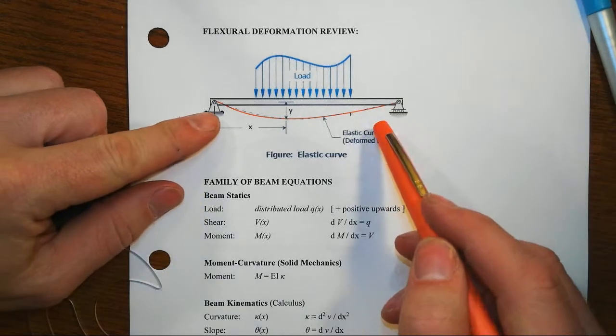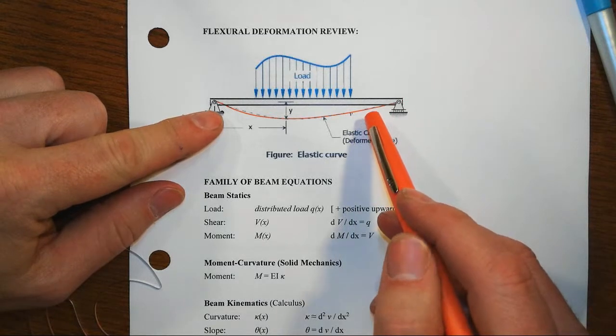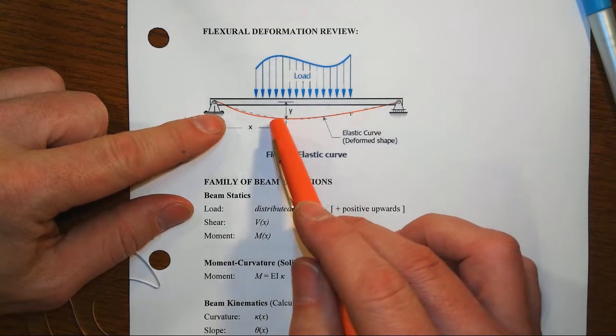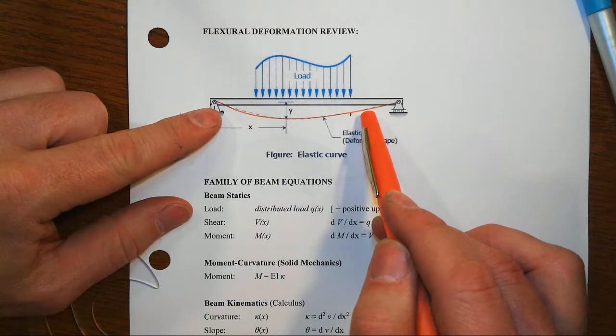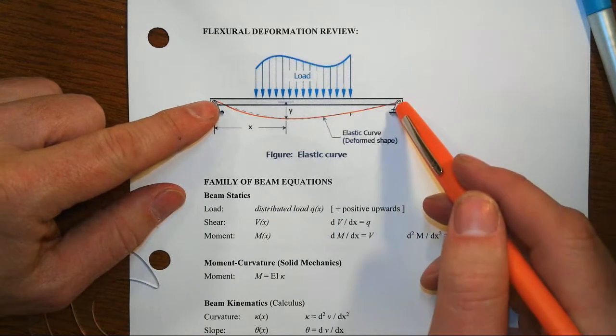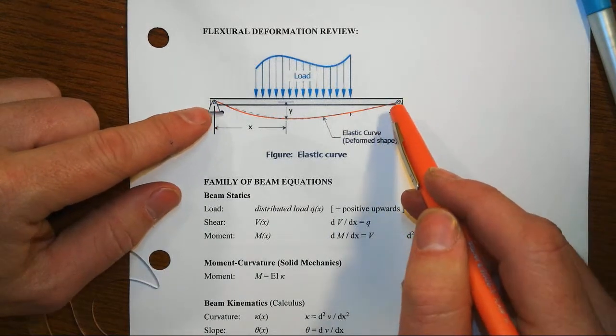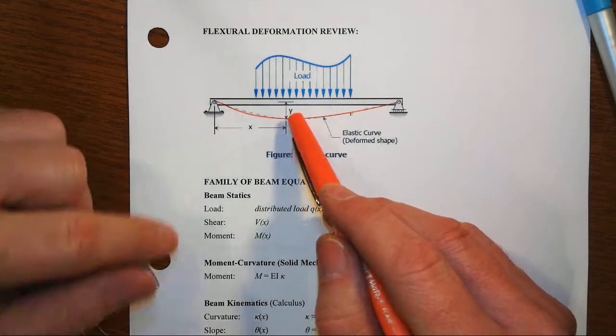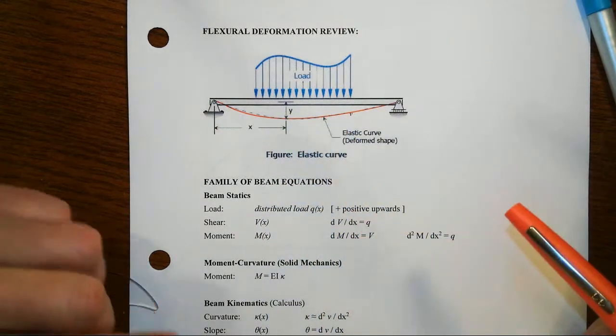Frequently in structural performance we need to try to have an understanding of how much a member will deflect. We're focused right now on bending types of deformations and displacements, whether there's rotations at the ends of the member or over supports, or how much is the maximum deflection under the response to the load.